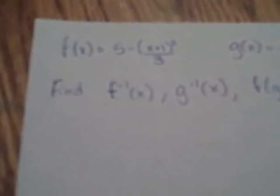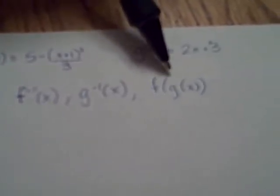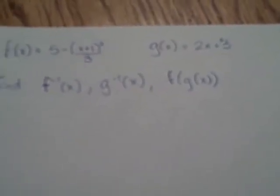Alright ladies and gentlemen, next problem we're going to work on functions f of x and g of x. We've got f of x equals 5 minus x plus 1 quantity squared divided by 3. Again I apologize, not enough focus on this camera. And g of x which is 2x plus 3. We want to find the inverse of f of x, the inverse of g of x, and then we're going to do that composition of functions f of g of x.